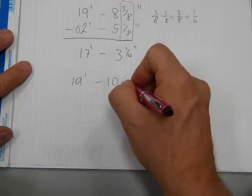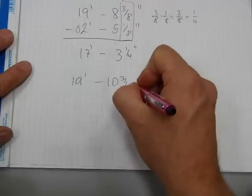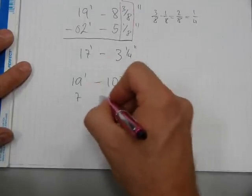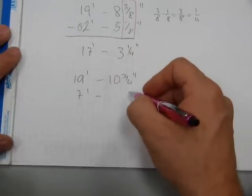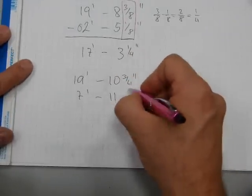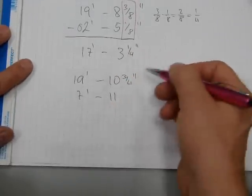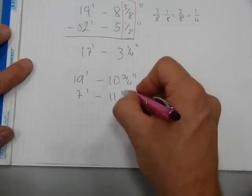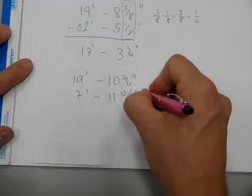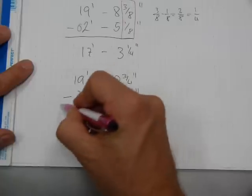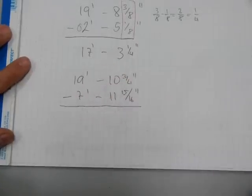3 quarters of an inch. And let's subtract 7 feet, 11 inches and 15 sixteenths. Again,